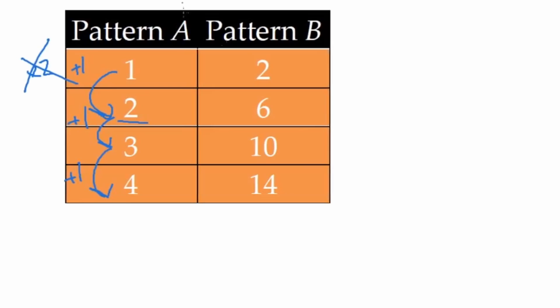All right, let's determine our rule for pattern B. How does this change each time? It's going to be the same way each time. So if we start at two, how could I get to six? Two plus four is six. But I also know that two times three is six. So how do we know which one of those is the rule? Is it this one or this one?